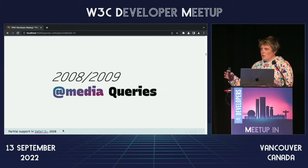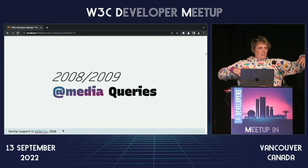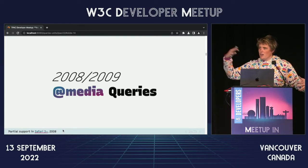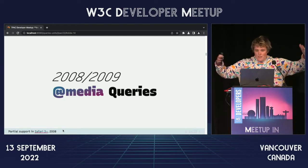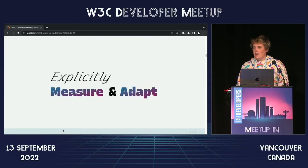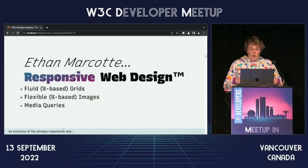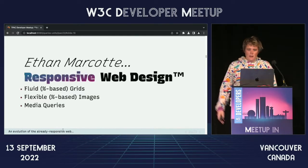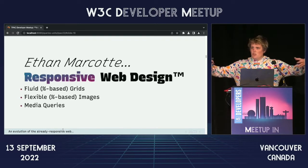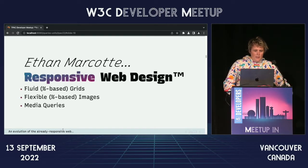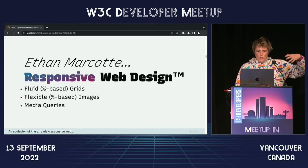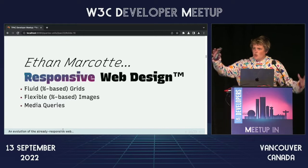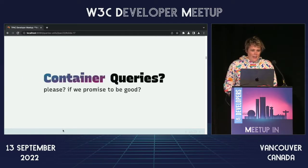Around 2008, 2009, we started to get media queries, which let us take this responsiveness and actually measure things intentionally, then make changes based on the measurements we get. We can measure the viewport, find out things, and explicitly adapt to those differences in context. Ethan Marcotte gave us a name for it — responsive web design — with a few rules to follow. We could have fluid percentage-based grids, flexible percentage-based images, and use media queries to make it all fit together.